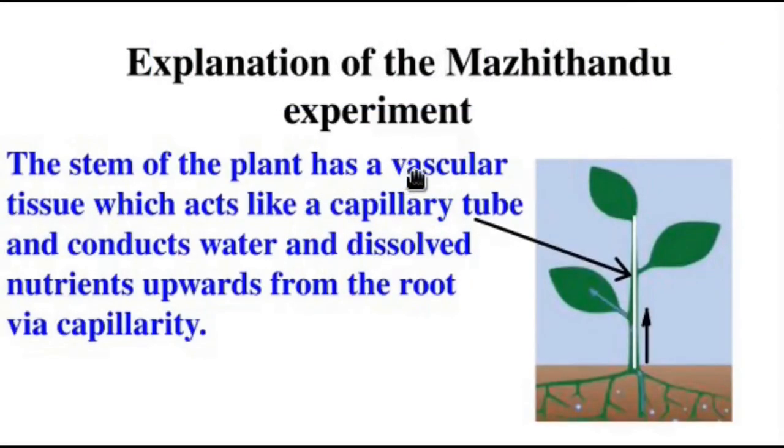After discussing the capillarity effect, let us revisit our Mashitanda experiment which we performed earlier, where we had kept the plant inside colored water for 2-3 days and then taken it out. The ink had been sucked up the stem of the plant and it has reached the leaves also. Now, the stem of the plant has a vascular tissue which acts very much like a capillary tube and conducts water and dissolved nutrients upwards from the root via the process of capillarity. So that is how plants take water and nutrients from the soil.